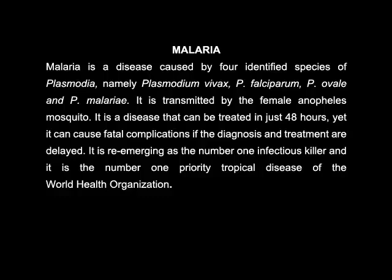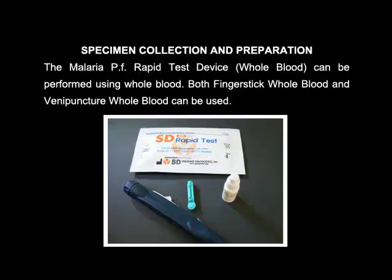It is recognized as the number one infectious killer and is the number one priority tropical disease of the World Health Organization. The Malaria PF Rapid Test is a rapid chromatographic immunoassay for the qualitative detection of circulating Plasmodium falciparum in whole blood.